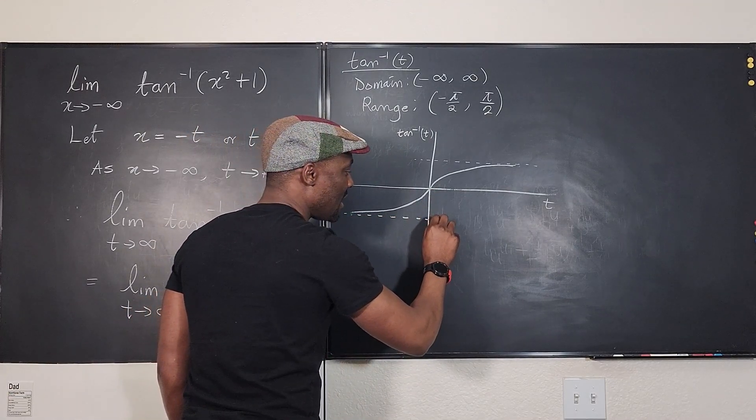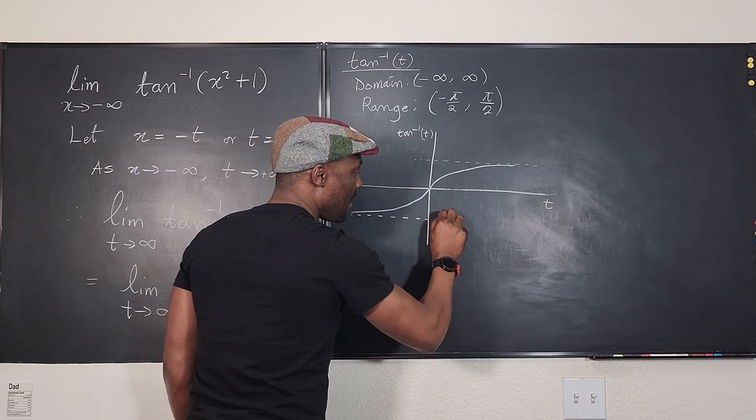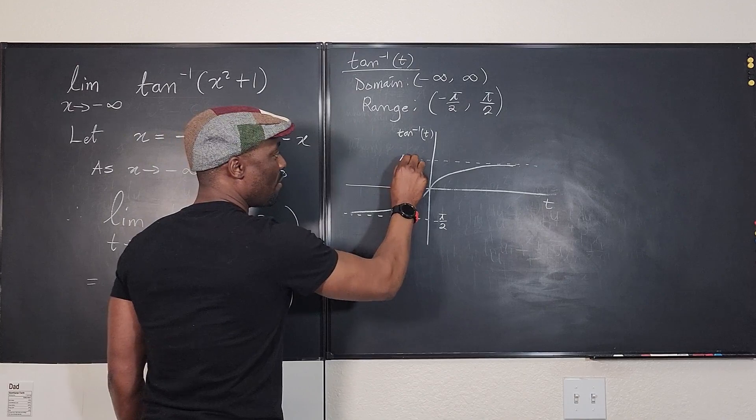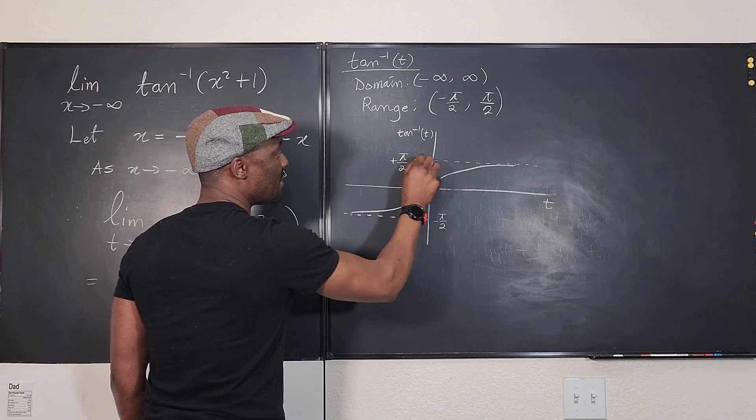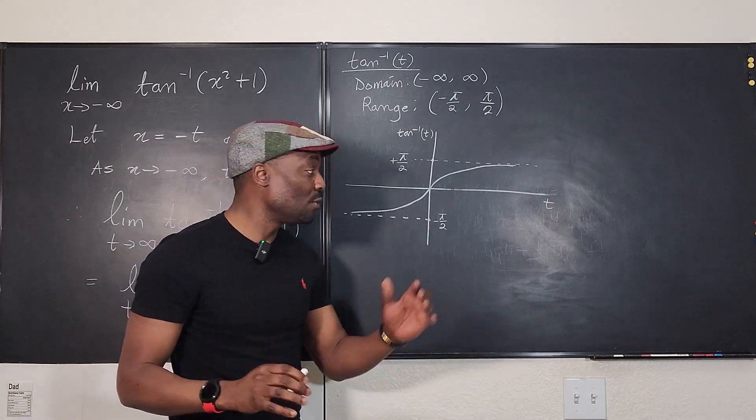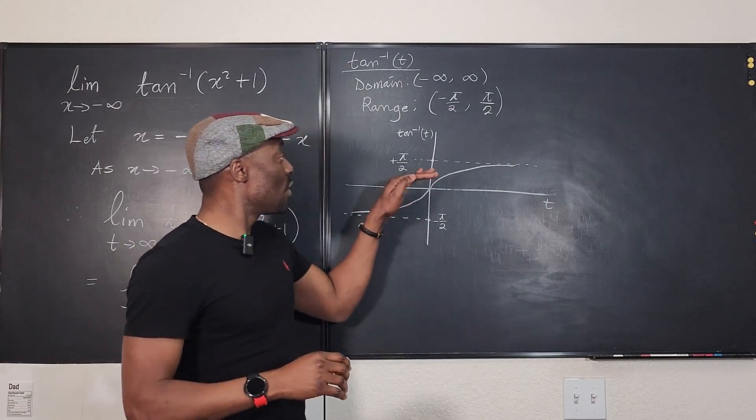There is a horizontal asymptote that it approaches perpetually, something like this. And there's another one here. This horizontal asymptote here happens at the point where y is π/2. Negative, this asymptote here is also π/2, the positive version.